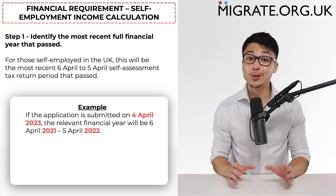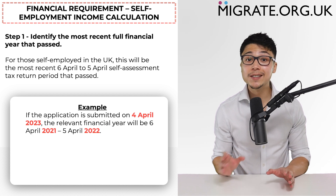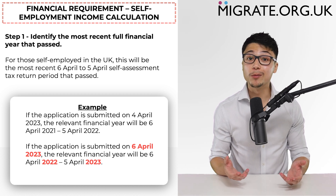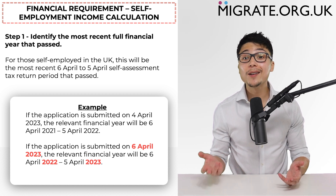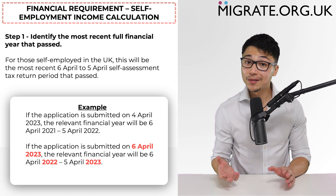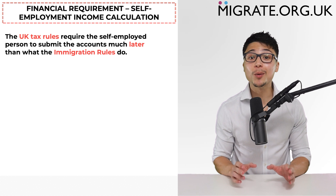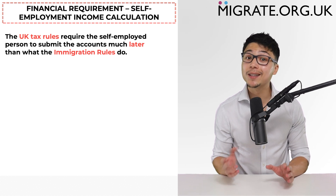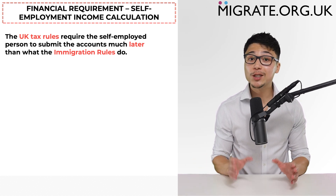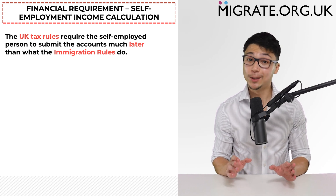For example, if the application is submitted on the 4th of April 2023 — just before the financial year ends — the relevant financial period will be the 6th of April 2021 to 5th of April 2022. On the other hand, if you apply on the 6th of April 2023 — just after the financial year ends — the relevant financial period will be the 6th of April 2022 to the 5th of April 2023. Two points are worth making: firstly, the UK tax rules require the self-employed person to submit accounts much later than what the immigration rules do, so if you apply shortly after the 5th of April, the immigration rules unfortunately still require submission of the self-assessment tax return. Secondly, for self-employed persons outside the UK, the relevant financial year will change depending on the taxation system in the country in which they're deemed to be self-employed.